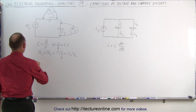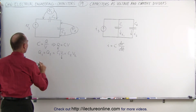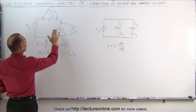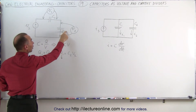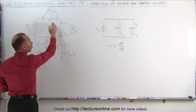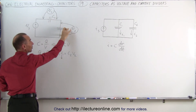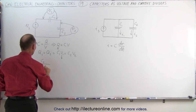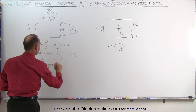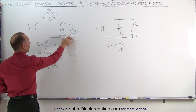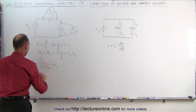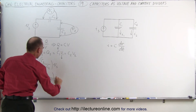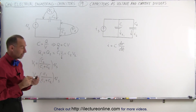The voltage across the first capacitor equals the ratio of the other capacitor's capacitance: if C1 is the smaller capacitor, it will have a larger voltage, meaning V1 is proportional to C2. So V1 equals C2 divided by (C1 plus C2) times the source voltage. Similarly, V2 equals C1 divided by (C1 plus C2) times the source voltage. That's how the voltage is divided.